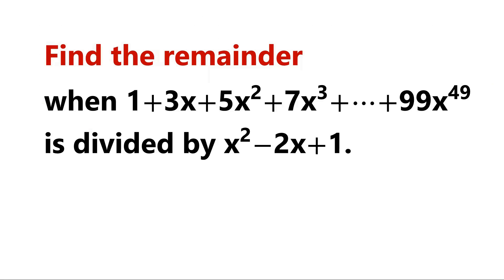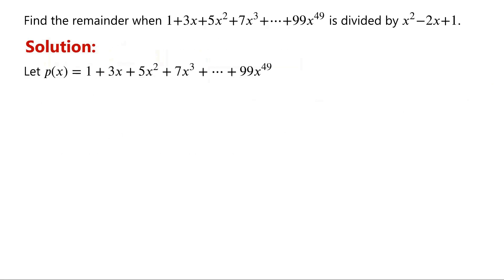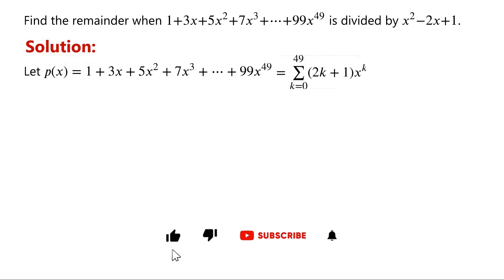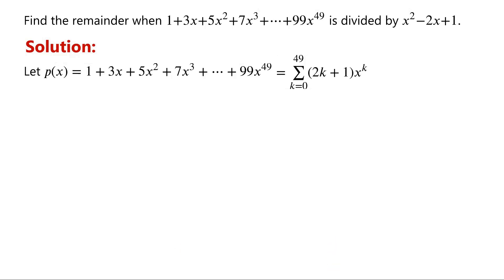Find the remainder when the polynomial is divided by x squared minus 2x plus 1. We let P of x equal the polynomial: 1 plus 3x plus 5x squared plus 7x cubed, plus so on, plus 99 times x to the power of 49, which can be written in compact form using summation notation as the sum from k equals 0 to 49 of (2k plus 1) times x to the power of k.